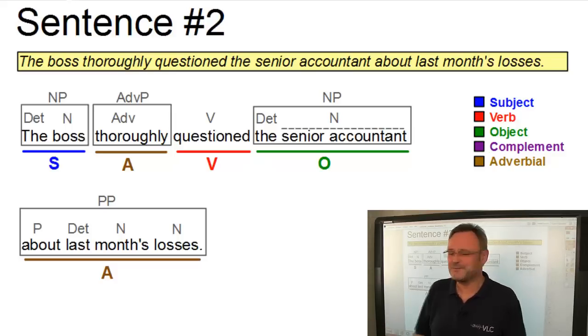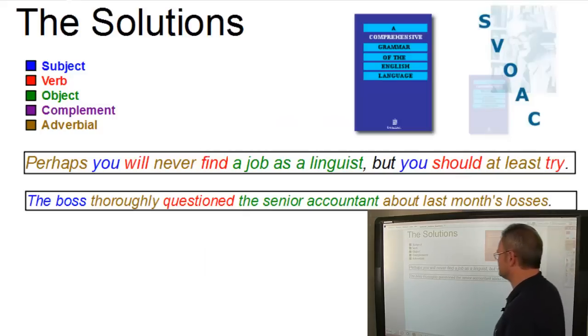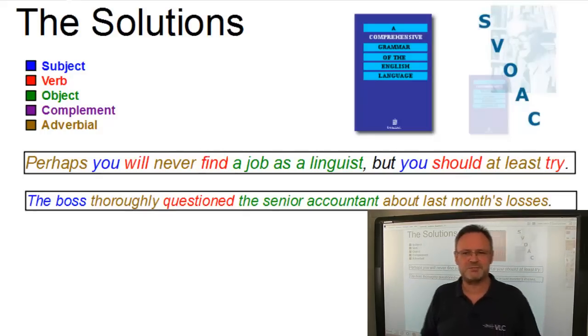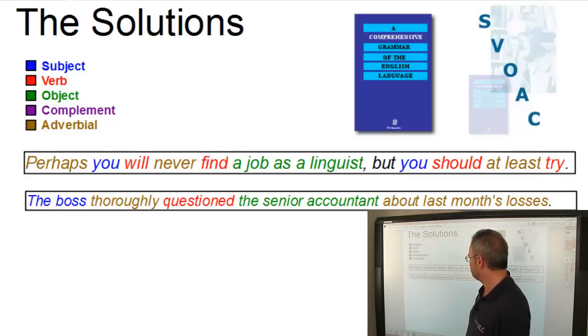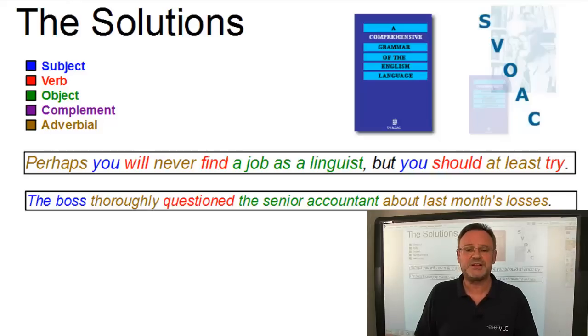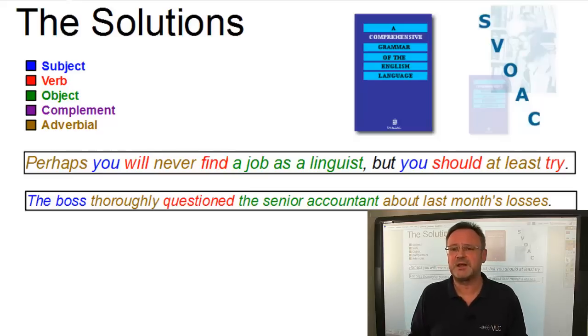Here are the solutions where I marked the syntactic functions in their standard colors on the virtual linguistics campus. Subject in blue, verb in red, object in green, and so on and so forth. All clauses clearly have a subject, verb, object structure which is typical for present-day English declarative sentences or clauses. They also contain some adverbials which are all mobile and can be dropped in these particular cases.